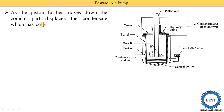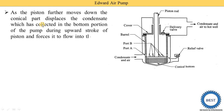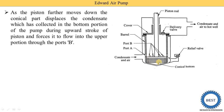As the piston moves further down, the conical part displaces the condensate which has collected in the bottom portion of the pump during the upward stroke of the piston, and forces it to flow into the upper portion through port B. So when the piston moves downward, the air and condensate below the piston move to the upper side of the piston through port B.